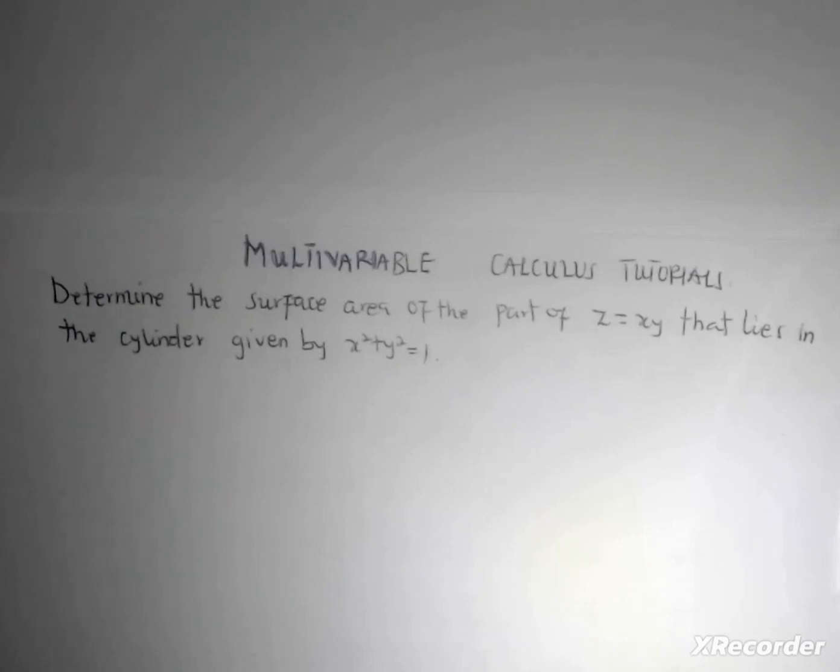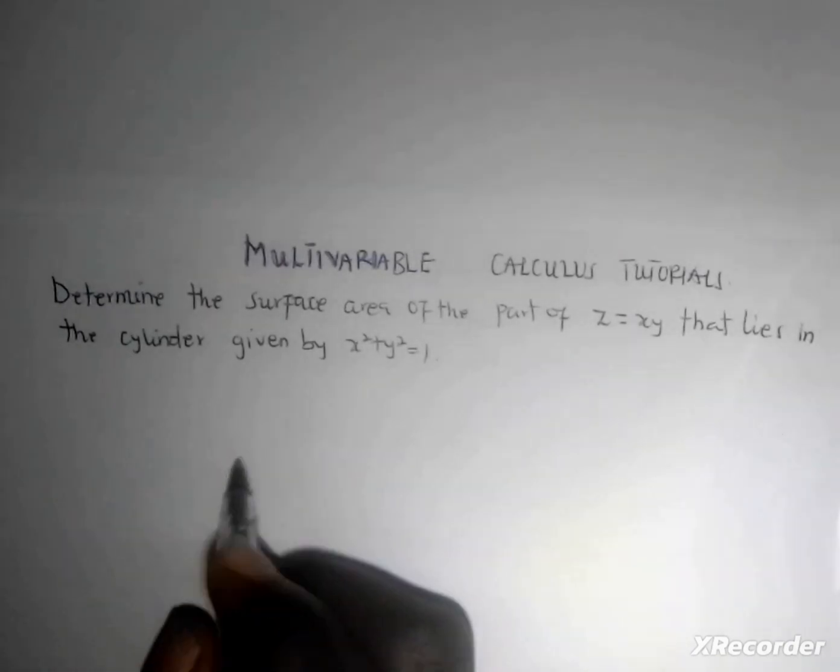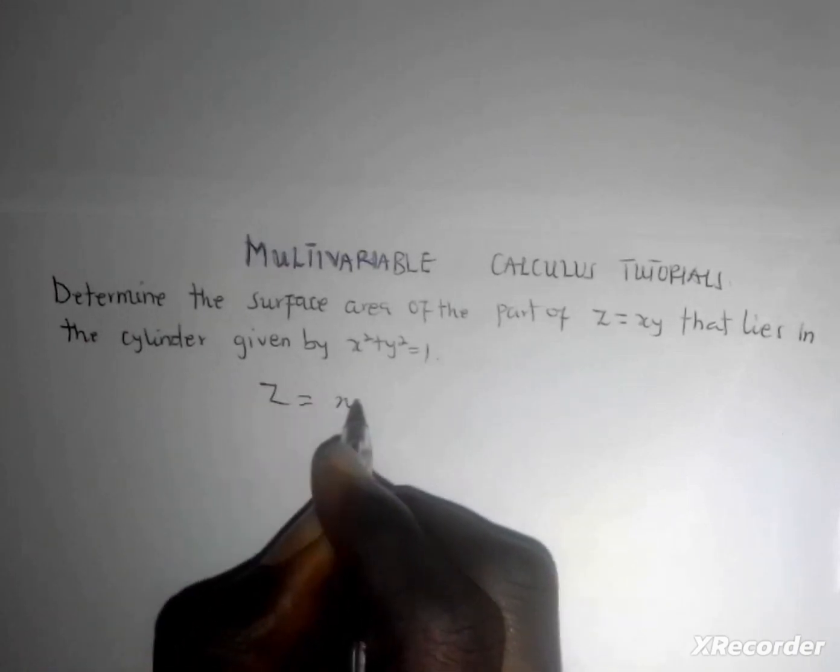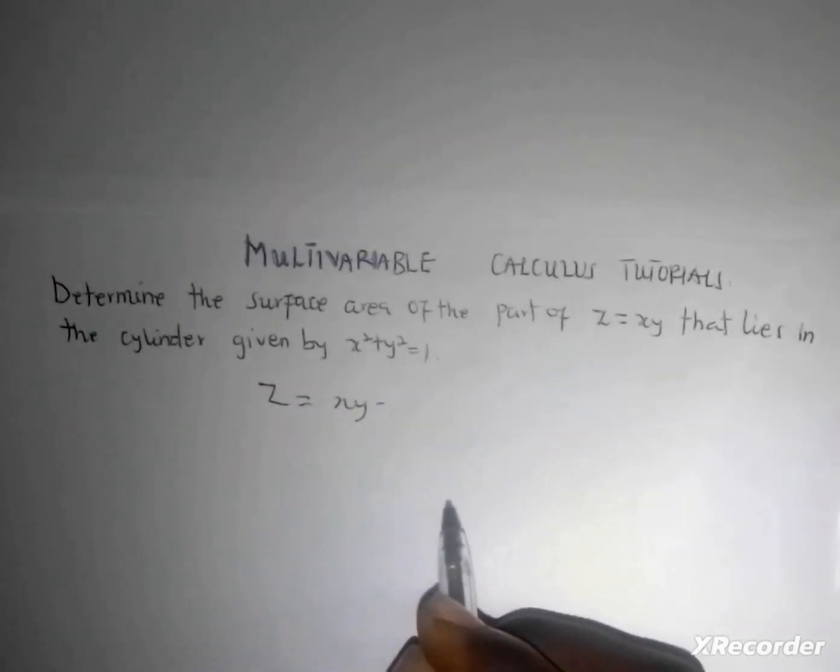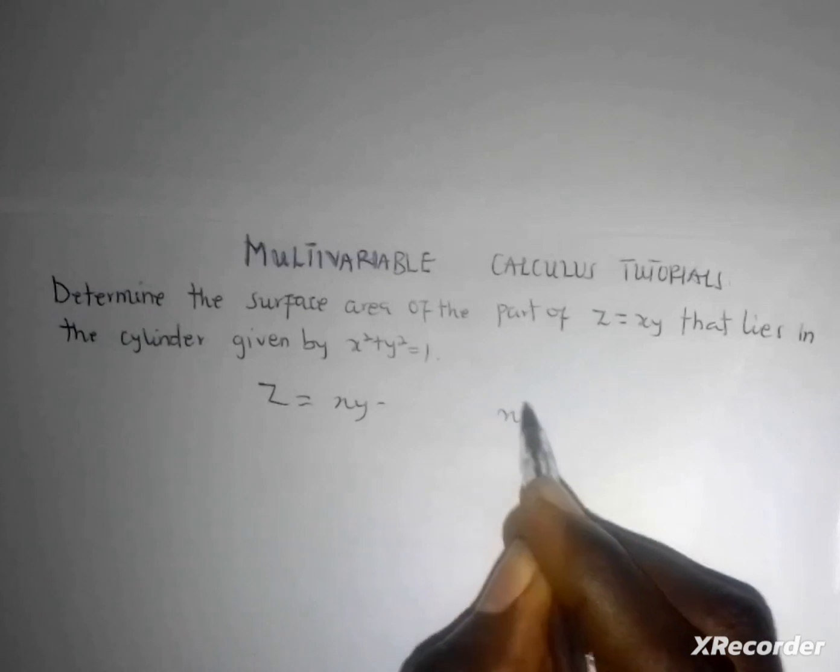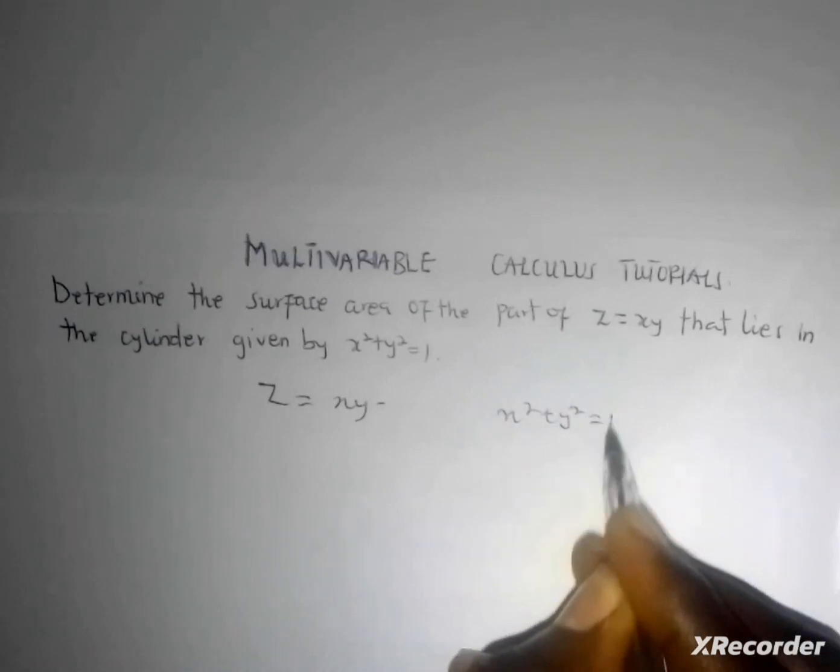Determine the surface area of the part of z = xy that lies in the cylinder given by x² + y² = 1. So I have z = xy, and then I have the cylinder x² + y² = 1.